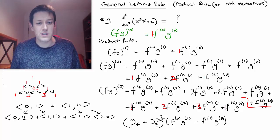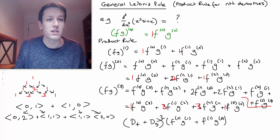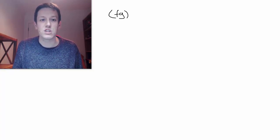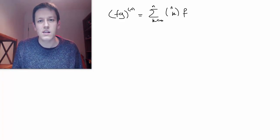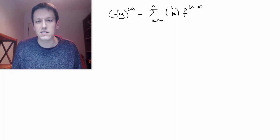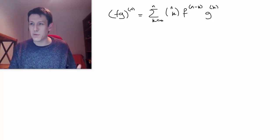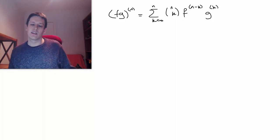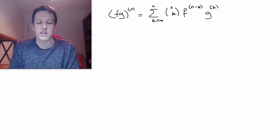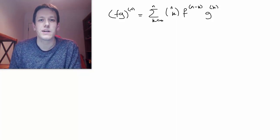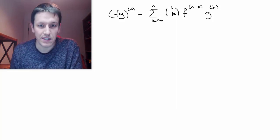That gives us the general Leibniz rule. If I want to differentiate f times g n times, I sum from k equals 0 to n of the binomial coefficient n-choose-k, times the (n minus k)th derivative of f, times the kth derivative of g. Everything here can be thought of as a function of x, though it could equally be functions of other variables differentiated with respect to those variables.